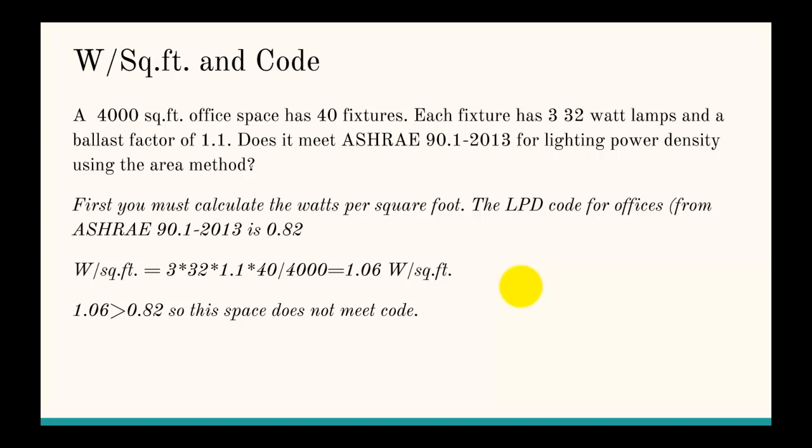First we'll calculate the watts per square foot, then we'll compare it to the lighting power density code for offices. If you look that up in ASHRAE 90.1-2013, it's 0.82 watts per square foot.